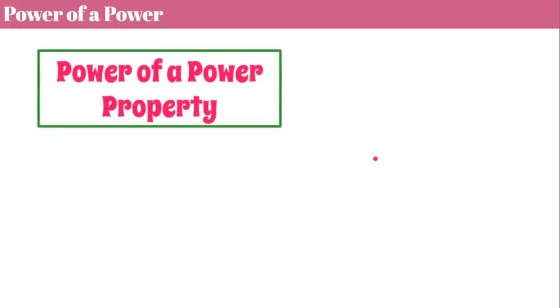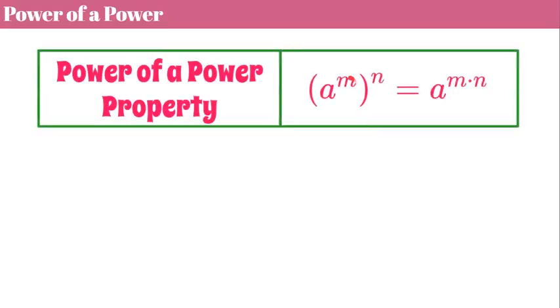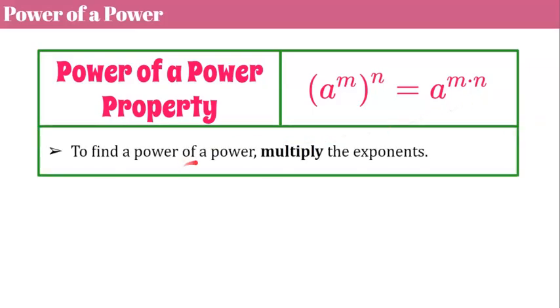Here's our second property, a power of a power property. And what this states is if your base is a power raised to an exponent, we can multiply the exponents. To find a power of a power, you multiply the exponents. And this simplifies what we've already been doing.